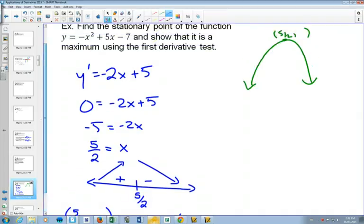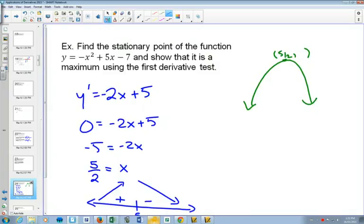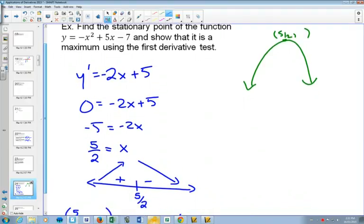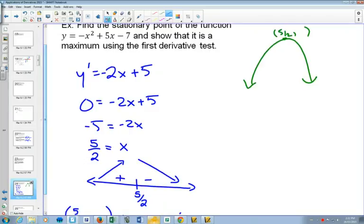Put it back into the original equation. So you'd have 5 over 2 squared plus 5 times 5 over 2 minus 7, which would be what, negative 25 over 4, minus negative 53 over 4 or something like that.